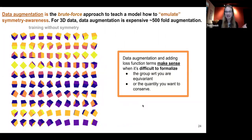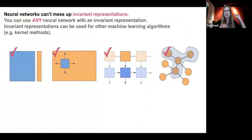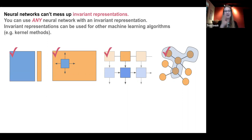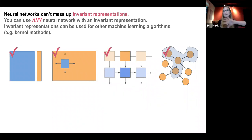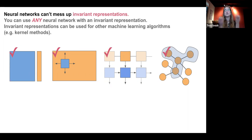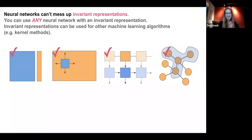Let's talk about approach two — invariant representations. An invariant representation sweeps under the rug all the complexities of the symmetry of how you'd most naturally represent your object. For example, an invariant representation of a molecule might be: how many atoms does it have, how many carbon atoms, how many hydrogen atoms — because no matter how many times you rotate the molecule, it has the same number of atoms. You featurize the data object to have features that don't change under a change of coordinate system or permutation.